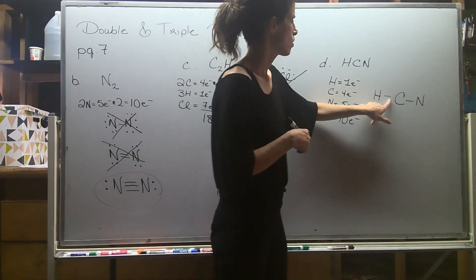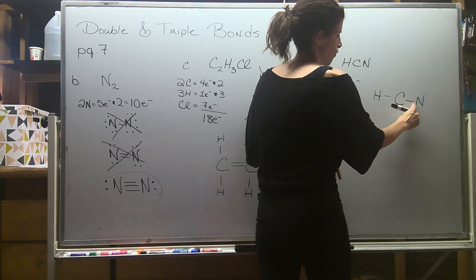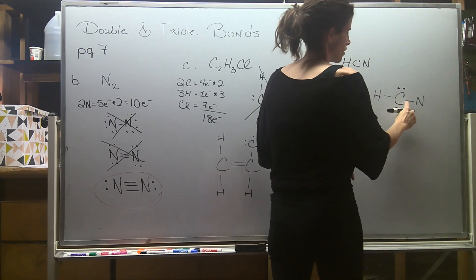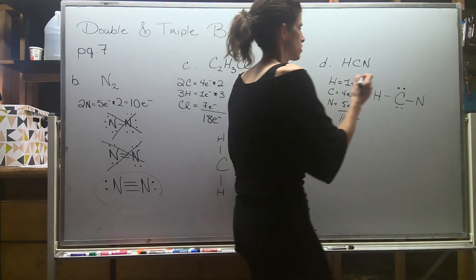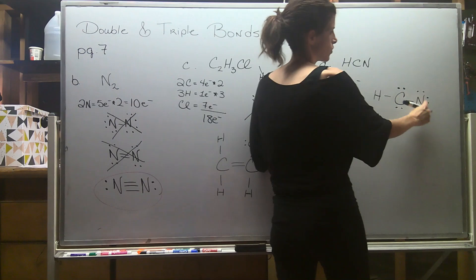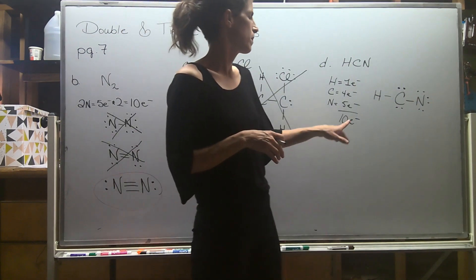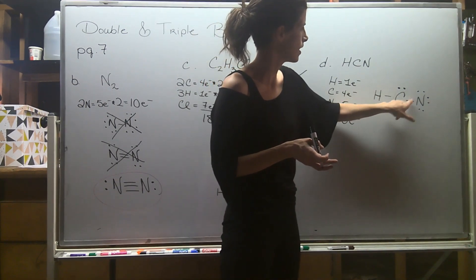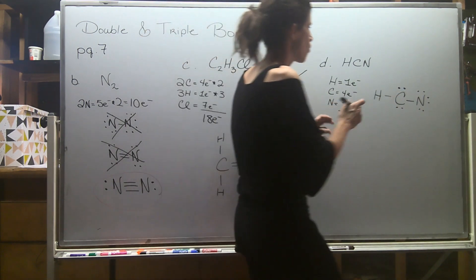Hydrogen is okay. Carbon only has two bonds right now, so I'll add electrons to get to eight: one, two, three, four, five, six, seven, eight. Nitrogen just has one bond, so it's going to need six more electrons to reach eight. Both carbon and nitrogen have eight electrons now. Checking the total: two, four, six, eight, ten, twelve, fourteen. I used 14 electrons — way too many when I only had 10.